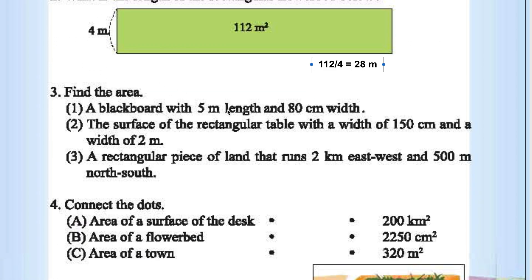Find the area. Blackboard with 5 meter length and 80 centimeter width. Let's convert both into either meters or centimeters. In meters it is 0.8, 5 into 0.8 is 4, so it will be 4 meter square.